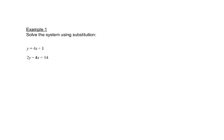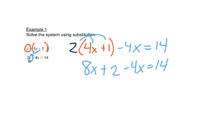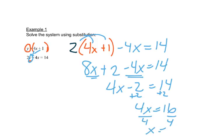Let's walk through an example. First, we want to choose a letter to get by itself. In this situation it's already done for us, so we are just going to use that y. That y says it is equal to 4x plus 1, so in place of y in the other equation we put in 4x plus 1. We have 2 times (4x plus 1) minus 4x equals 14. We distribute, combine like terms, add 2 to both sides, divide by 4, and we find out x is 4.